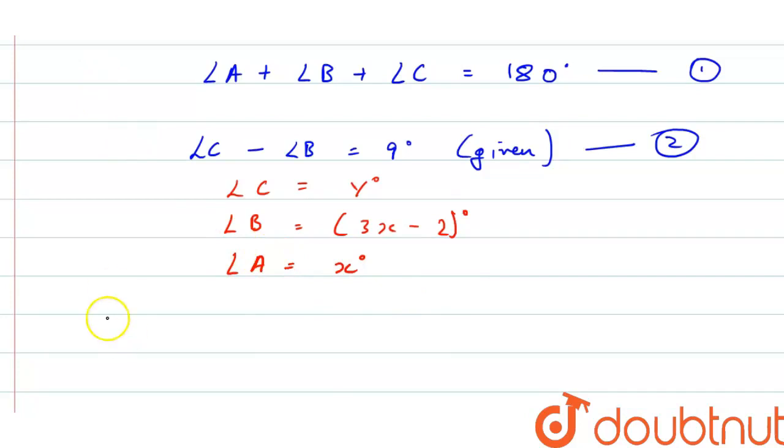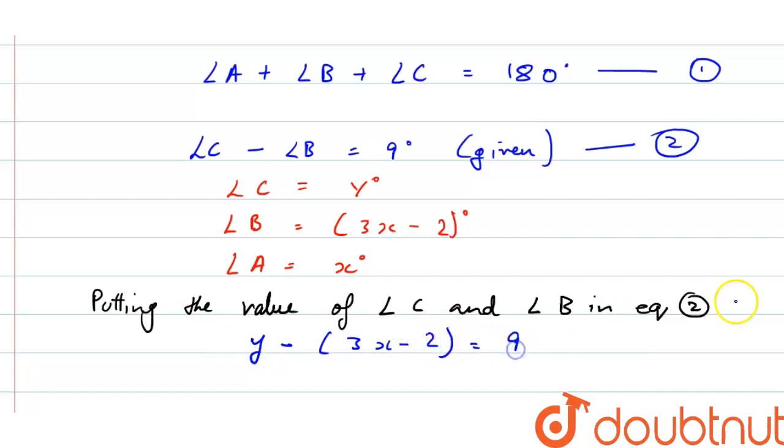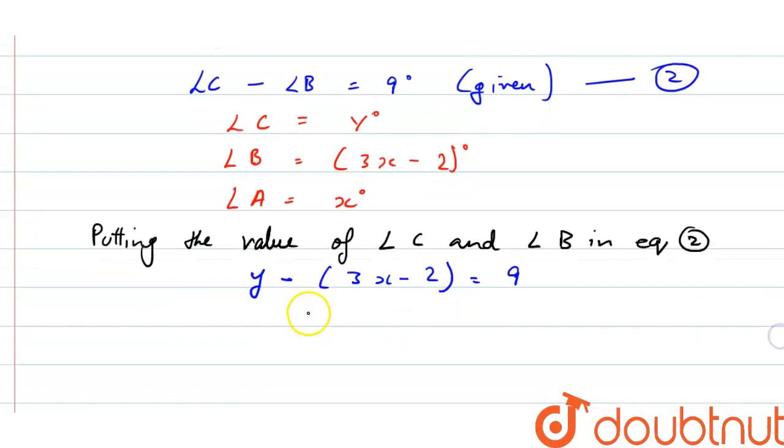Now, putting the value of angle C and angle B in equation 2, then we will get y minus (3x minus 2) equals to 9. Then we have y equals to 7 plus 3x.